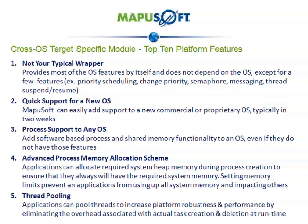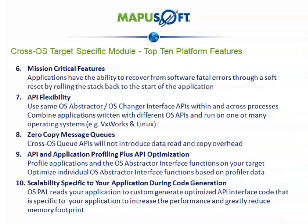Number four, cross-OS includes an advanced process memory allocation scheme. This allows applications to allocate required system heap memory during process creation to ensure that they always will have the required system memory. Setting memory limits prevents an application from using up all the system memory and impacting others. Number five, cross-OS provides a thread pooling feature that allows applications to pool threads to increase platform robustness and performance by eliminating the overhead associated with actual task creation and deletion. Number six, cross-OS provides mission critical features including providing applications the ability to recover from software fatal errors through a soft reset by rolling the stack back to the start of the application.